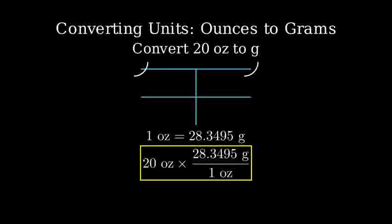Now, let's multiply. 20 times 28.3495 equals 566.99 grams. Rounding to one decimal place, we get 567.0 grams.